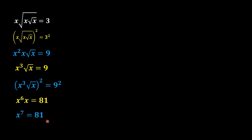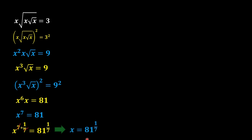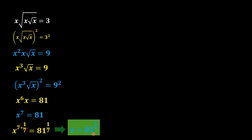Our main goal is to find the value of x, not x to the power 7. In order to remove this power of 7, we apply the power of one over 7 on both sides of the equation. The 7 and one-over-7 cancel out, and as a result we get x equals 81 to the power one over 7. This is our answer.